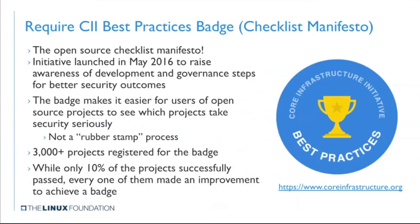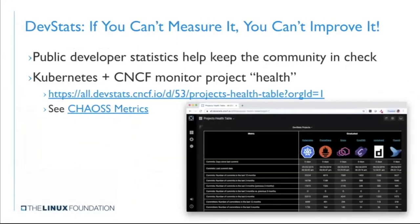One thing we do within CNCF that's been super useful is have all of our projects achieve a best practices badge from the Core Infrastructure Initiative, which is another Linux Foundation project. You can think of this as a checklist — like the book Checklist Manifesto — of things and practices that an open source project should have. These include having a security disclosure mechanism, static analysis, a way for people to contact you to report issues, and other basic things. We now have a few thousand projects across the open source ecosystem that have adopted this.